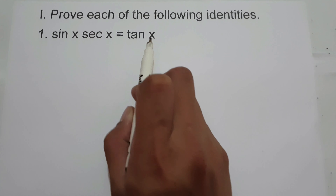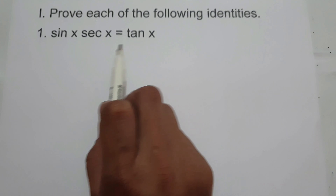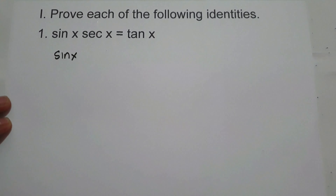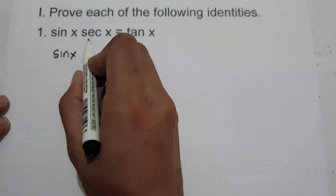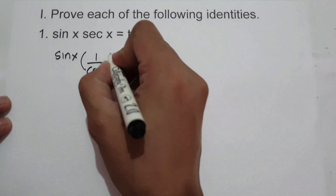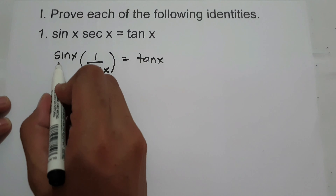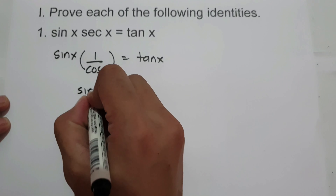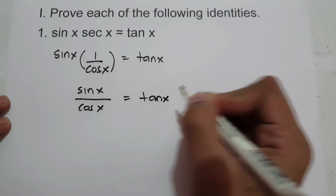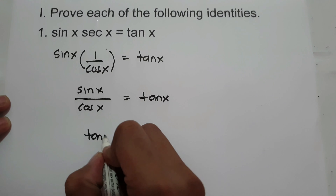In proving trigonometric identities, we want to prove that the left side of the equation is equal to the right side of the equation. So to prove the given identity, let us rewrite sin x and let us change secant x into 1 over cosine x equals tangent x. So to simplify, sin x multiplied by 1 over cosine x, that is sin x over cosine x equals tangent x.